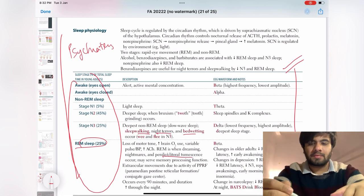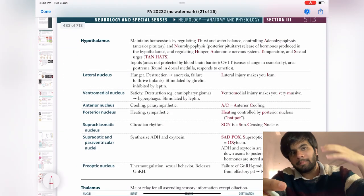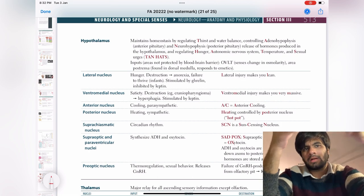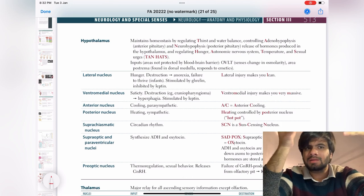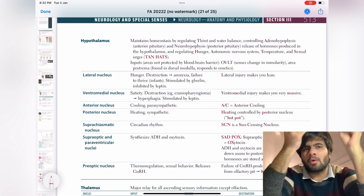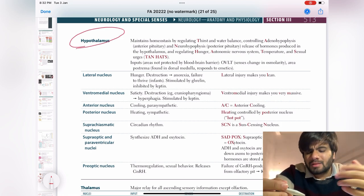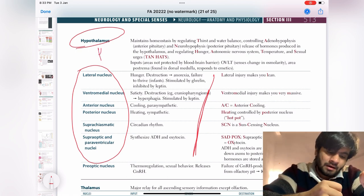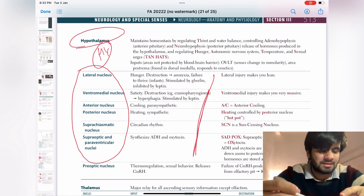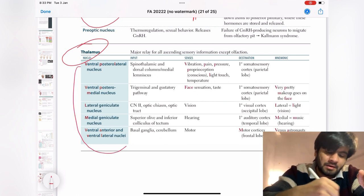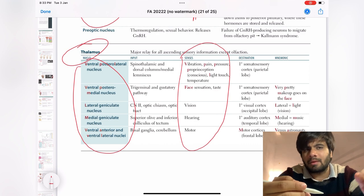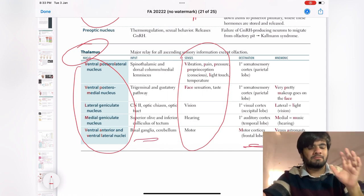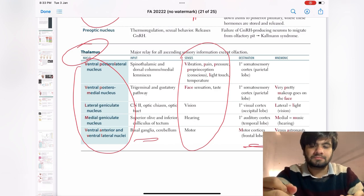Let's move ahead to the basic structures of the brain: hypothalamus, thalamus, brainstem, and all that. CNS is totally memory plus logic — if your memory is strong, you just look at the symptoms and know where the problem lies. Starting with the hypothalamus: nothing to understand — you remember the nucleus, remember the function. It's very high yield. Coming to the thalamus — same thing: remember the nucleus, remember the senses. If you can't remember the input, at least remember the senses for the thalamus.